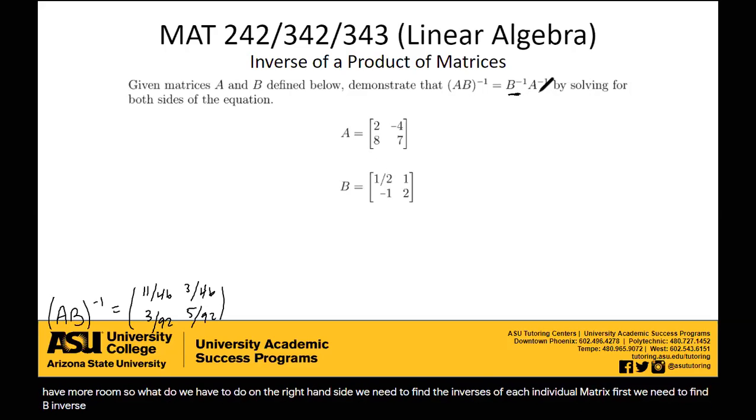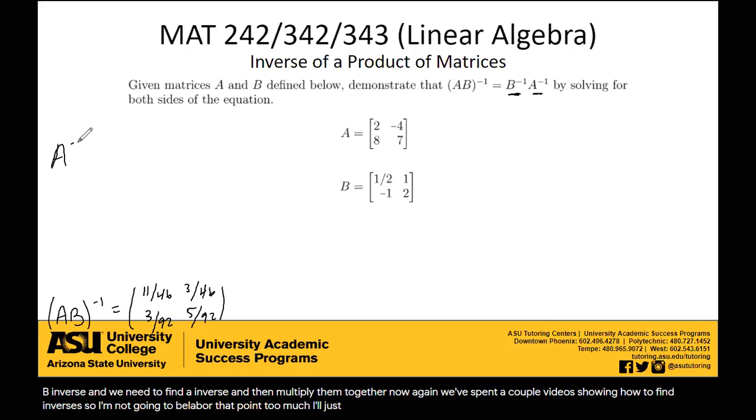So what do we have to do on the right-hand side? We need to find the inverses of each individual matrix first. We need to find B inverse, and we need to find A inverse, and then multiply them together. Now, again, we've spent a couple videos showing how to find inverses, so I'm not going to belabor that point too much.